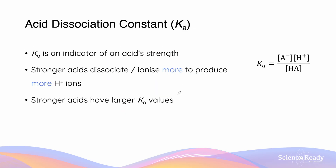Thinking about our Ka formula again — it's products over reactants, so Ka is an indicator of acid strength. If the acid is strong, it ionizes more to produce more hydrogen ions, leaving no reactants, giving an infinitely large Ka. If Ka is getting smaller, we have a weaker acid because less of the reactant is being converted into ions.